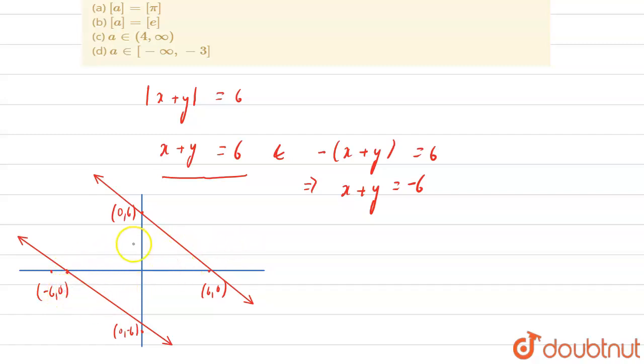So this is our (-6,0). So you see that these sides are parallel and the area between them is this.